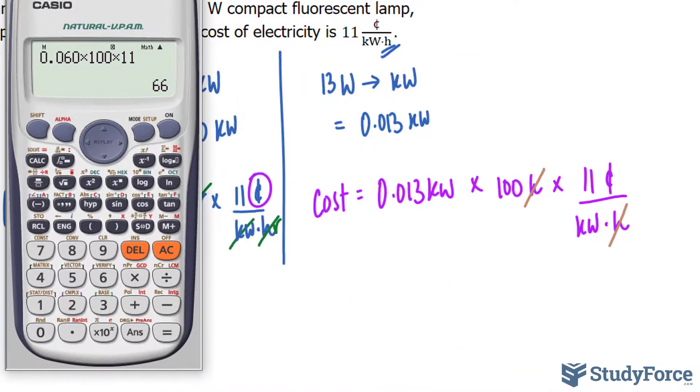Let's see if we can improve that with the compact fluorescent lamp. 0.013 times 100 times 11 makes only 14.3 cents.